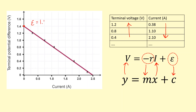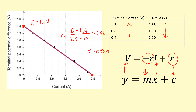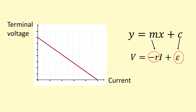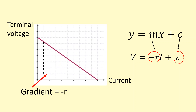The EMF is 1.4 volts. To find the gradient, I use the two values at the very ends: y₂ minus y₁ gives 0 minus 1.4, divided by 2.5 minus 0. The gradient is negative 0.56, which means my internal resistance is 0.56 ohms.